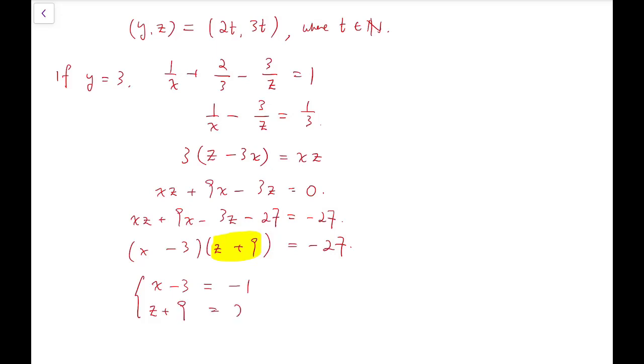Now, z plus 9 has to be 27. So therefore, x equals 2 and z equals 18. So that's another set of solutions.